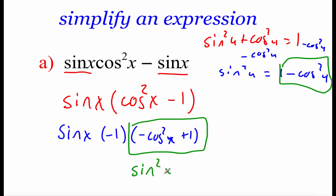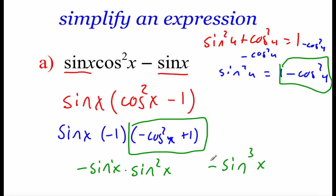So I replace that with sine squared of x. Then I multiply the negative one times the sine of x out front, giving me negative sine of x times sine squared of x. This is a first-powered sine times a second-powered sine — we add exponents and get a third power. So our final answer is negative sine cubed of x. There's no more simplifying we can do, so we circle that and leave it.